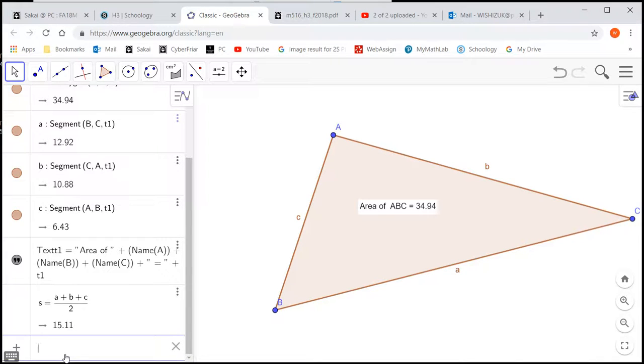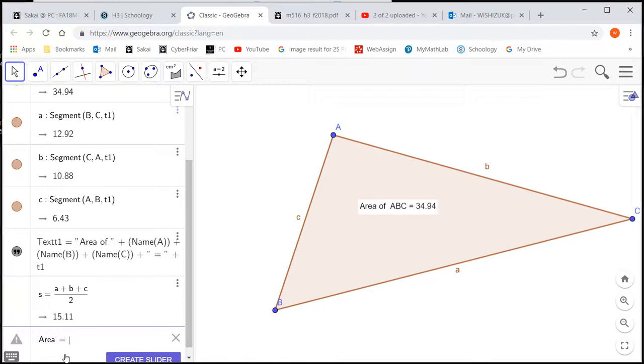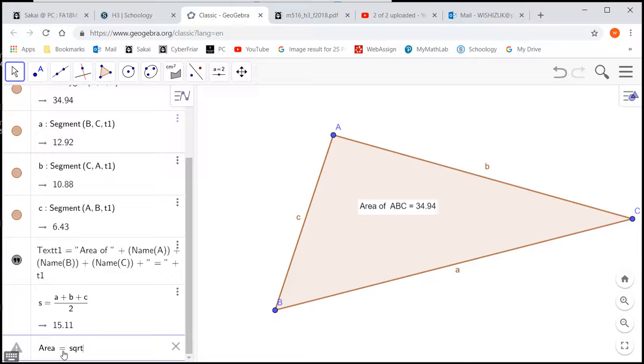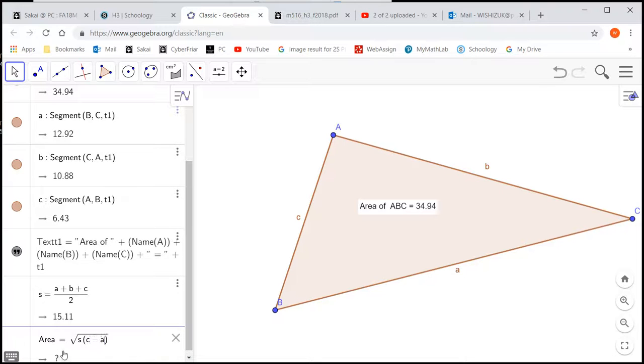And the Heron's formula—I'm going to call this area—is equal to the square root. So we say SQRT, square root of s times s minus a—actually, I meant s minus a—times s minus b times s minus c. And hit enter.